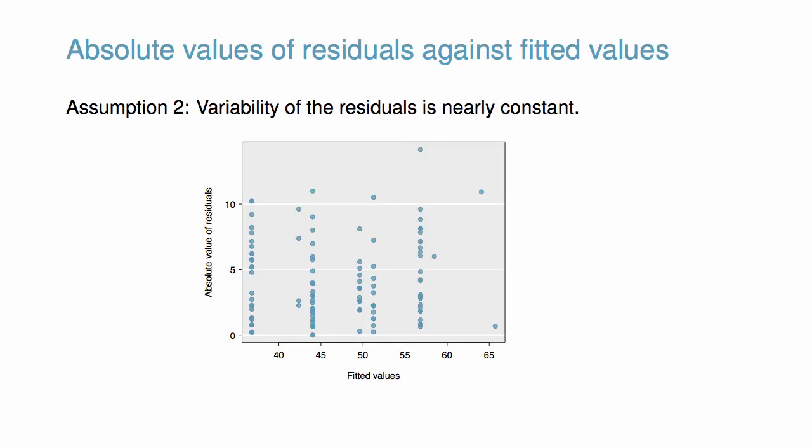Here we're using a plot of the absolute value of the residuals against their corresponding fitted values to investigate whether the variability is nearly constant. We don't see any obvious deviations from constant variance in this example.